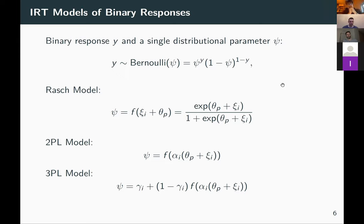We can go further and define the 2PL model, adding a discrimination parameter alpha_i to account for items measuring the person trait in different ways. We multiply alpha_i by the sum of the person and easiness parameters. The 3PL model additionally includes a guessing parameter gamma_i, which can vary across items. All these classical models can be written as special cases of this general Bernoulli regression framework.